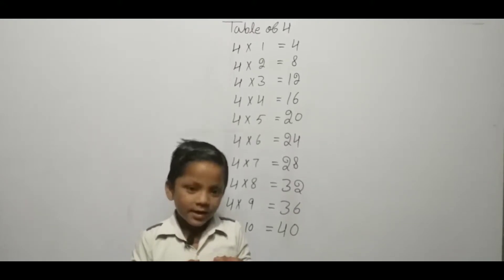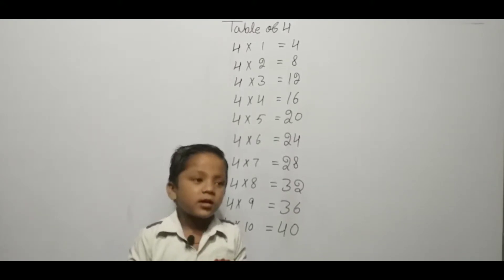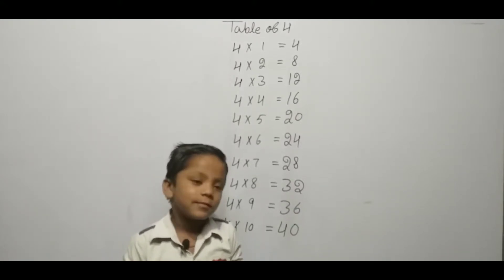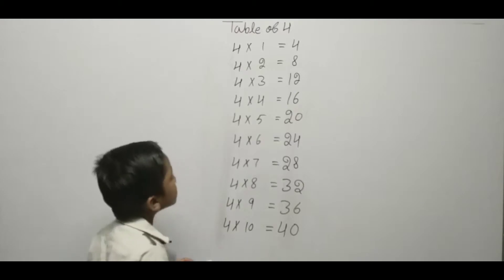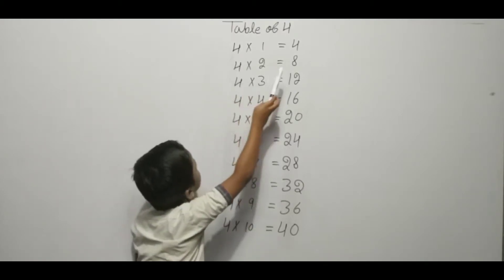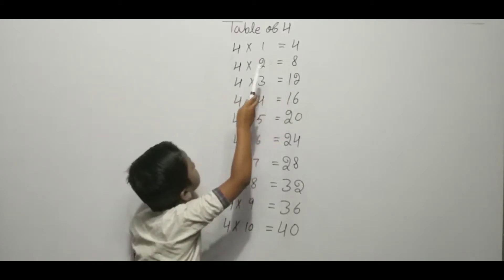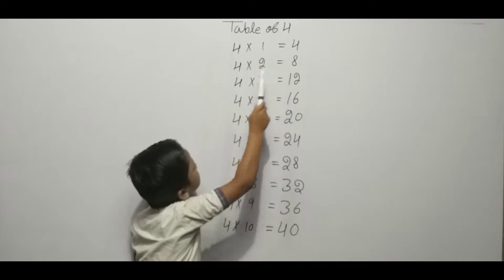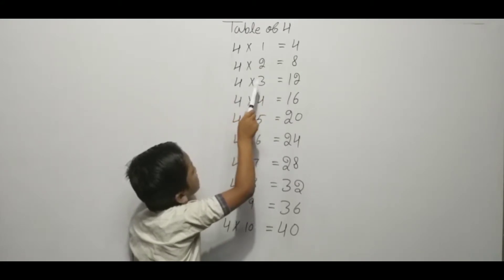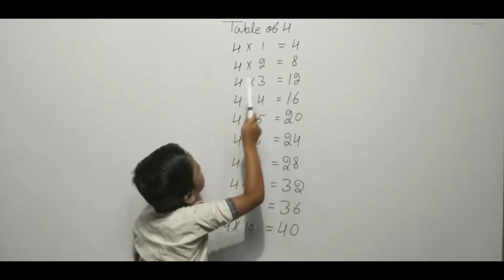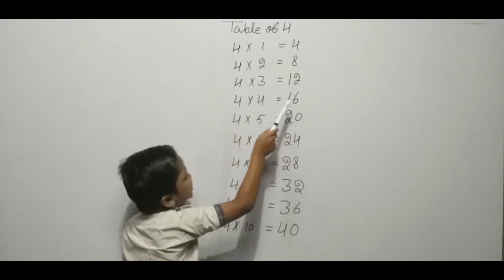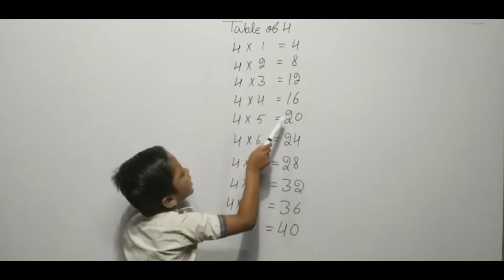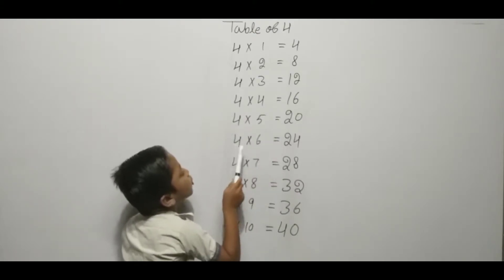Hello friends, we are learning. Table of four. Four one ja four, four two ja eight, four three ja twelve, four four ja sixteen, four five ja twenty.